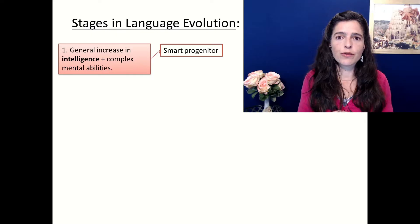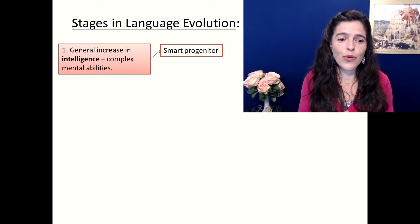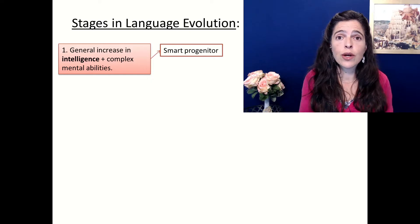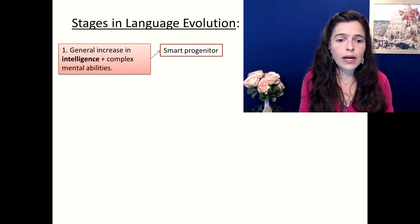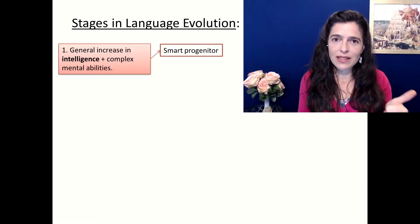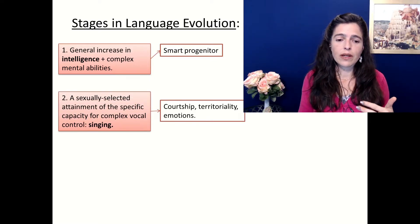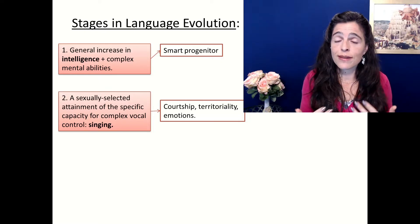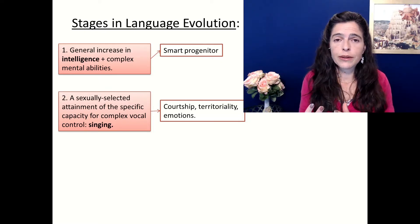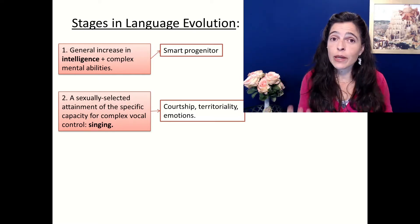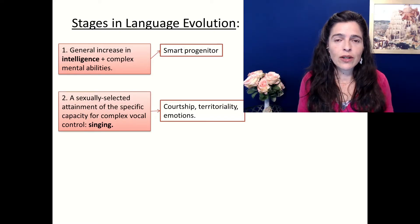This is his idea. First, there was some kind of smart ape that was born with a lot more intelligence and more complex mental ability — for example, abstraction or the capacity to hold thoughts in mind for a while. That was stage one, a genius primate ancestor. Stage two was that this primate ancestor started using sounds and singing for courting, for territoriality, to express emotions — basically to attract a mate. Natural selection made it so that the ones most able to sing and attract a partner survived longer and continued evolving.